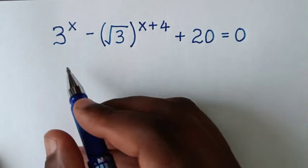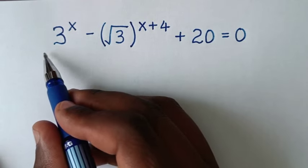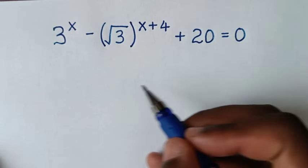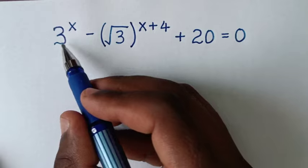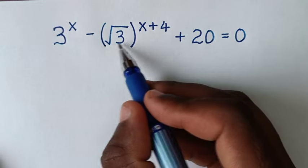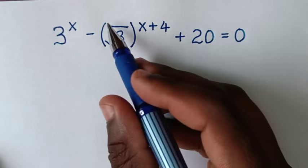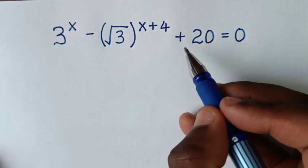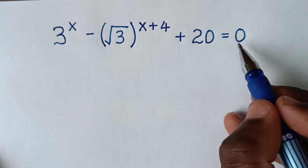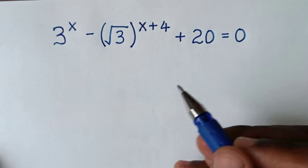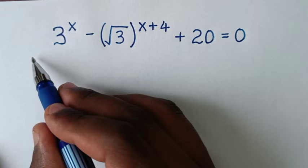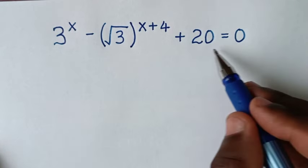Hello, you are welcome to solve this math problem, which is 3^x minus (√3)^(x+4) plus 20 is equal to 0. We need to find the values of x from this equation.